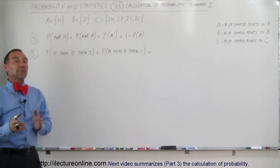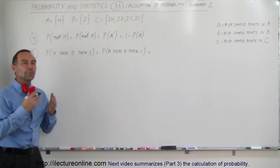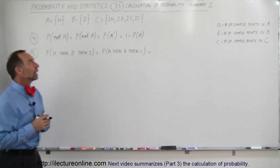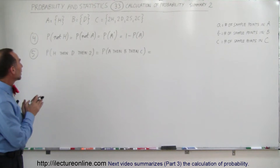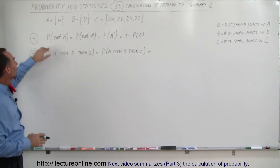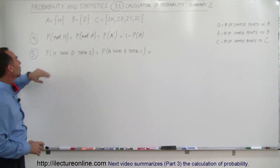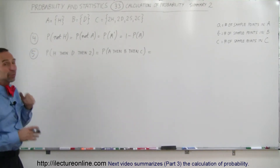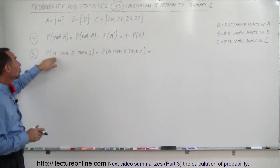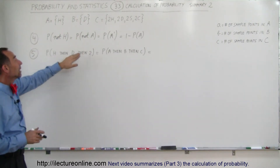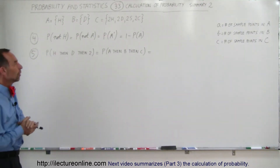Welcome to Electron Online. We're going to take a look at the next two probability calculations. We're dealing with the probability of not getting H, and the probability of getting H, then a D, then a 2. Let's find out what this is all about.